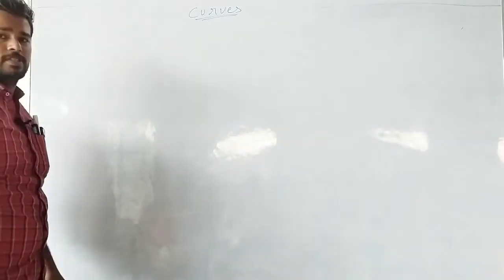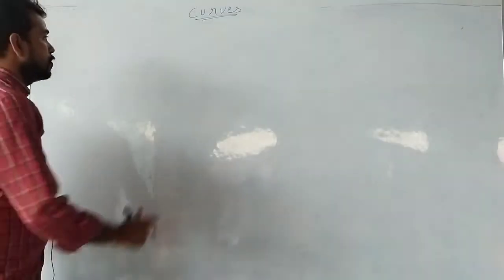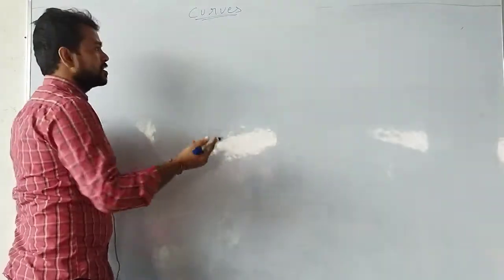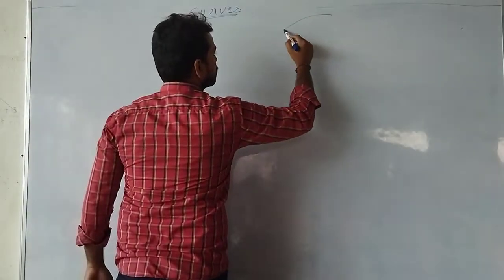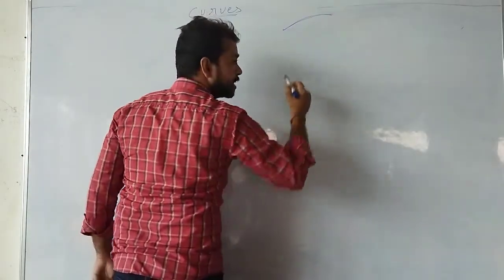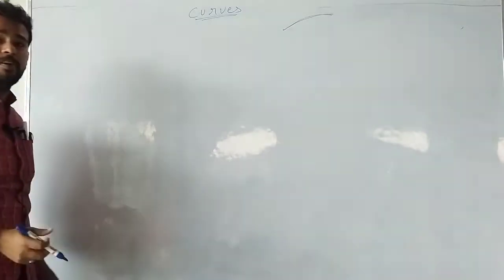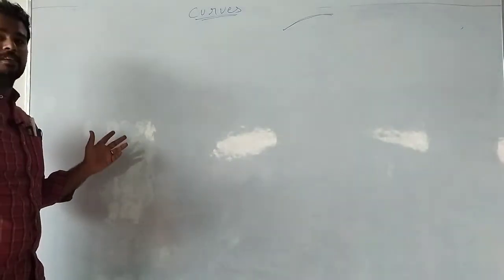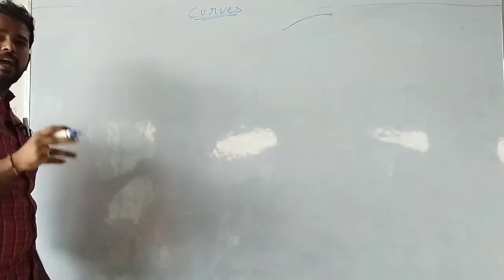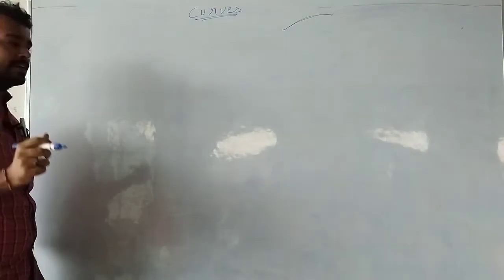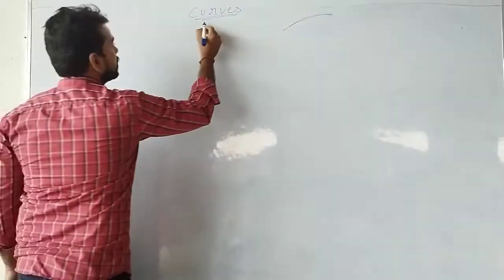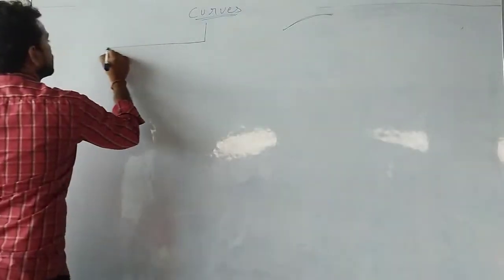Our next topic is curves. A curve can be an arc or anything. A straight line is also a curve which has infinite radius, and a circle is also a curve which has finite radius. In curves there are several types.